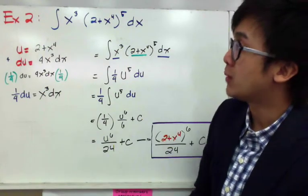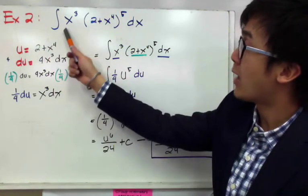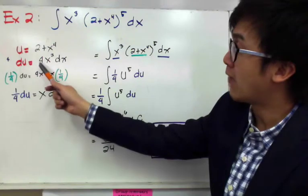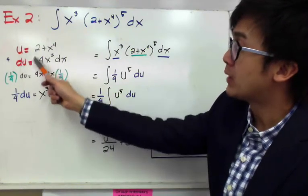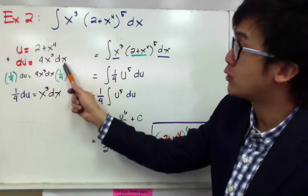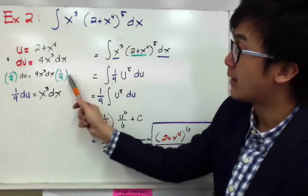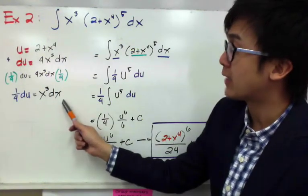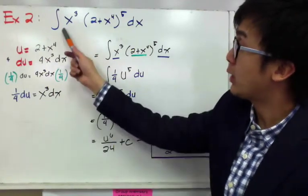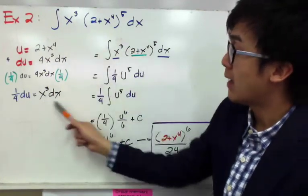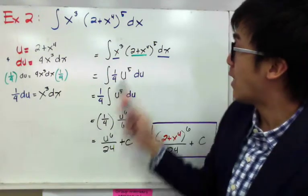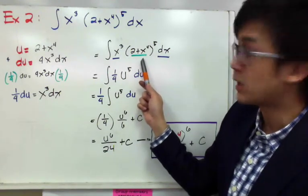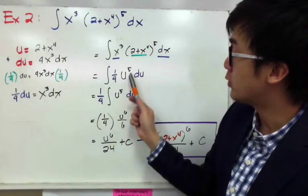The difference between example one and example two is that in our original function we only have x cubed dx, but in our du we have 4x cubed dx. So we need to eliminate the 4 by multiplying both sides by one-fourth, giving us x cubed dx equals one-fourth du. Now we can replace x cubed dx with one-fourth du by substitution, so the original function becomes the integral of one-fourth u to the fifth du.